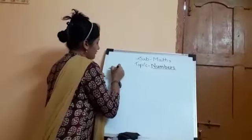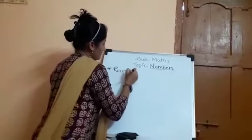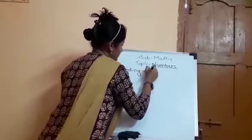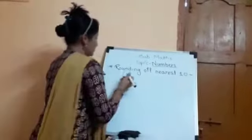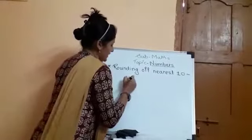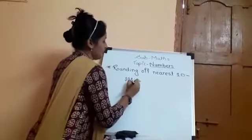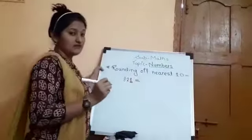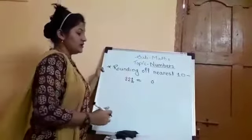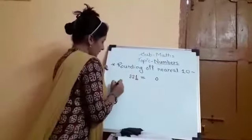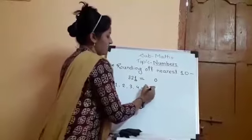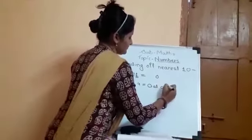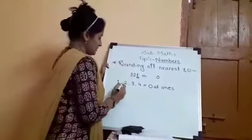The next concept is rounding off, specifically rounding off to the nearest 10. For example, let's solve for 321. Here you consider the digit at the 1's place when rounding off to the nearest 10. The 1's place digit will become 0. If the 1's place digit is 1, 2, 3, or 4, you put 0 at the 1's place and the other digits remain as they are.